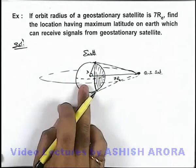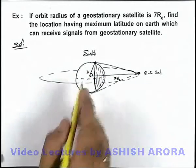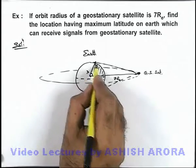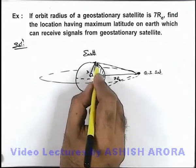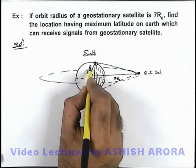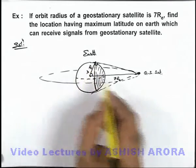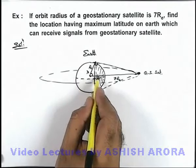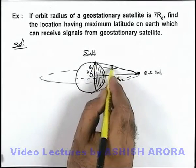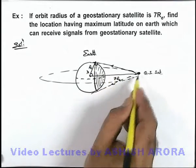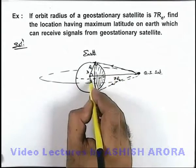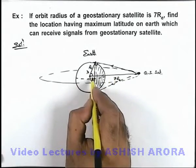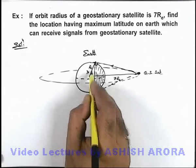In this situation, this is a right-angle triangle where this is Earth's radius, and we can easily find out the value of this maximum latitude up to which the signals from the geostationary satellite can be received.